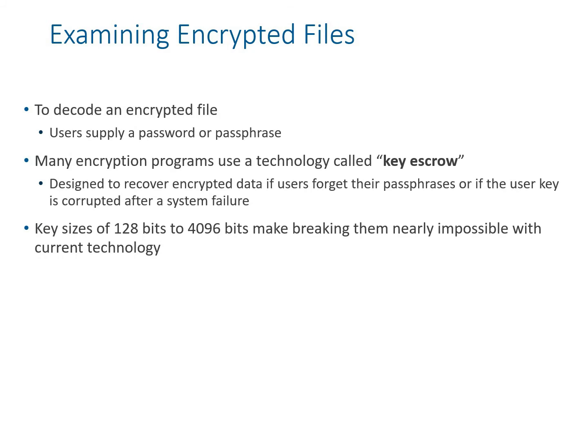Now we'll understand encryption. To decode an encrypted file, the user usually supplies a password or passphrase kept secret by whoever encrypted the file. Many encryption programs use a technology called key escrow, designed to recover encrypted data if the user forgets the passphrase. If the user key is corrupted after a system failure, they'll use this passphrase to recover the actual data. Key sizes are increasing over time, from 128-bit to 4096-bit, making it almost impossible for standard investigative setups to decrypt a hard drive and find what data was stored.